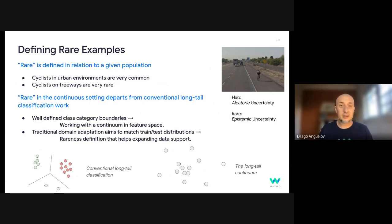And before I go into the solution, I'll talk a little bit about what is really rare. So defining even what is rare is a bit challenging. So first, rare is defined relative to a given population. For example, cyclists in urban environments are reasonably common, but on highways, they're very rare. And so the concept of rare is relative, not absolute.